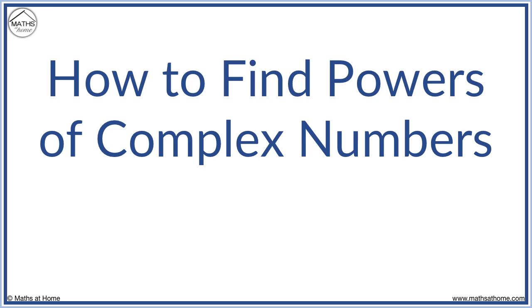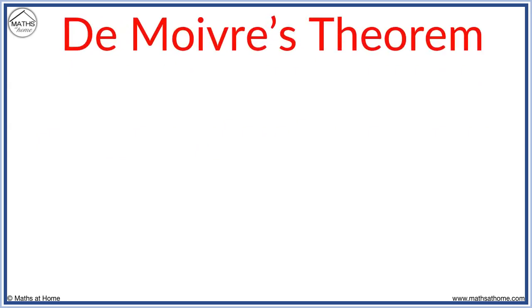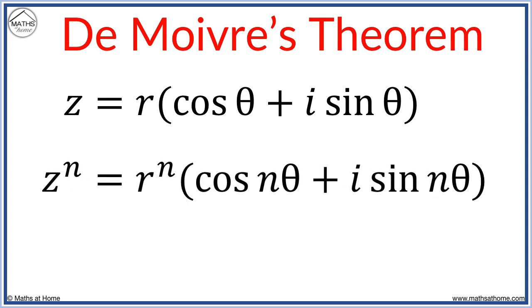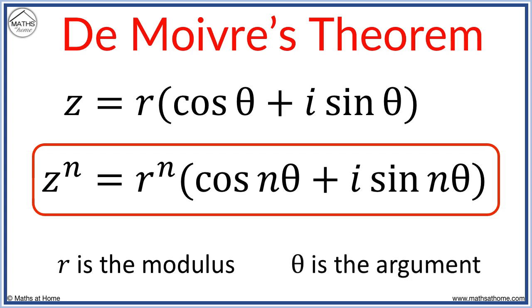In this lesson, we use de Moivre's Theorem to find powers of complex numbers. De Moivre's Theorem states that a complex number in the form z equals r cos theta plus i sine theta raised to the power of n is given by z to the power of n equals r to the power of n cos n theta plus i sine n theta, where r is the modulus and theta is the argument.